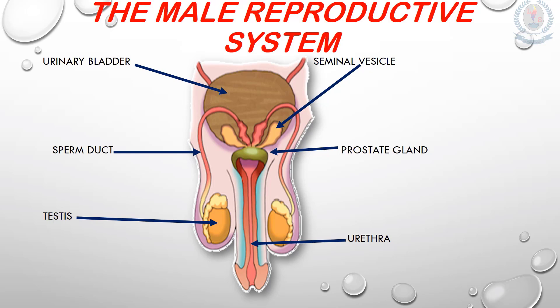When you look at that picture you can see there are two testes. There is a urethra, sperm duct, prostate gland, and it contains two seminal vesicles with a urinary bladder. Now you know what are the main parts of the male reproductive system.